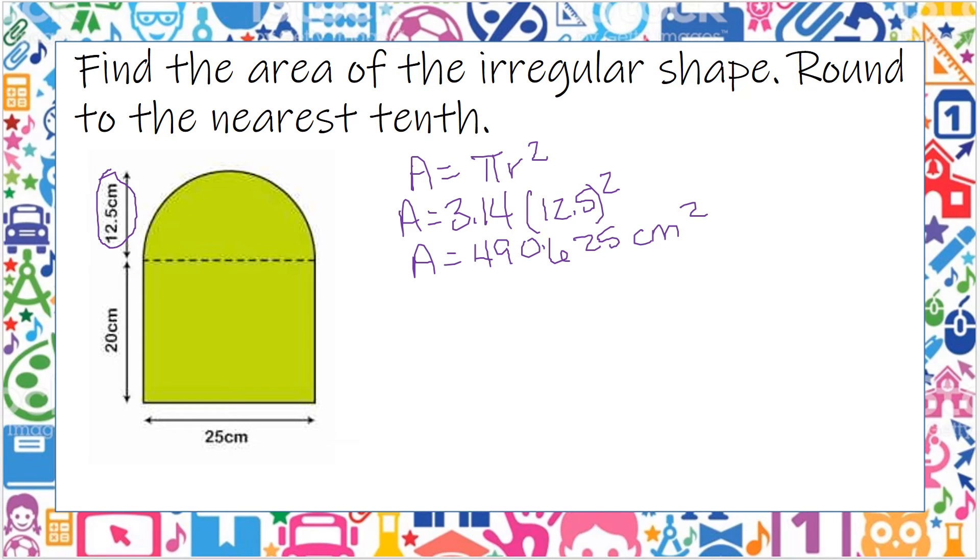Well, I don't have the whole circle. I only have half of it. So I'm going to divide that by 2, and I do get 245, and I'm just going to round it to the nearest tenth there, 0.3, and that is centimeters squared. So I found the area of half a circle.